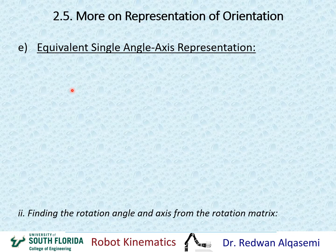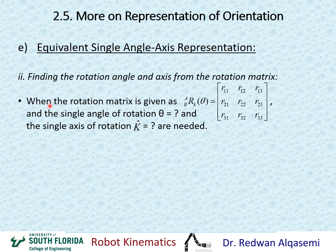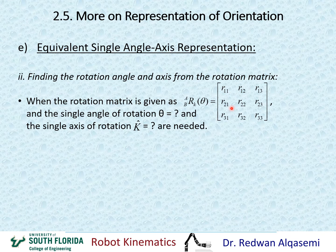Now, when we have the opposite problem — when we have a general rotation matrix and we need to find the single angle-axis representation — we need to find the rotation angle and rotation axis from the rotation matrix. So when the rotation matrix is given as R(K, theta) with elements R11 through R33, we need to extract the single angle theta and the single axis vector K.